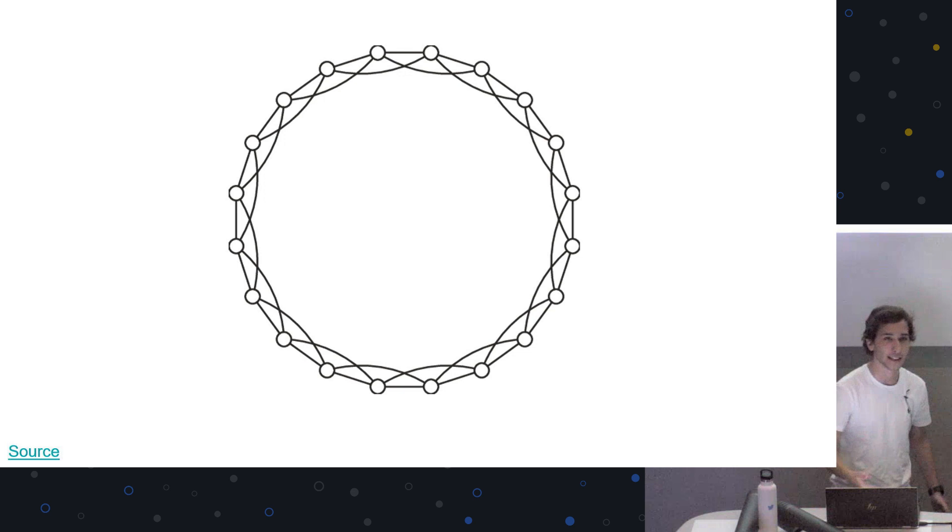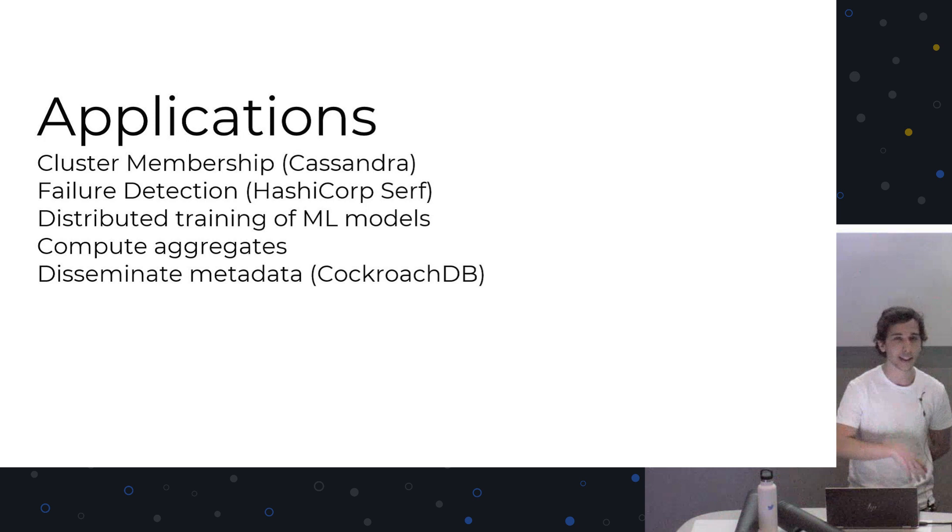This can be used for different applications. You can use it for cluster membership. So there's a very popular database called Cassandra. And Cassandra is a distributed database. So you have different copies of the software running in a load of different servers. And you need to keep track of the servers that you have so you know where data is stored and things like that. So they just use a gossip protocol under the hood to spread which nodes are part of the cluster. You can use it for failure detection. So maybe you have a critical service and you want to know whether or not things are going down or not. You need to make sure that they're up. You can use it for failure detection.